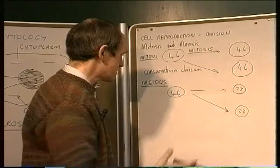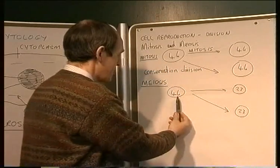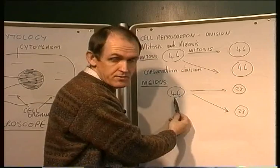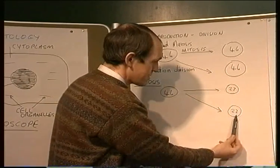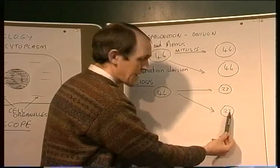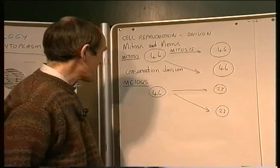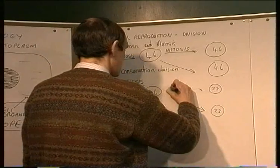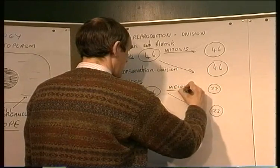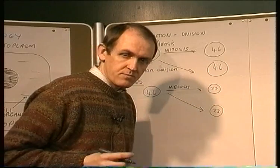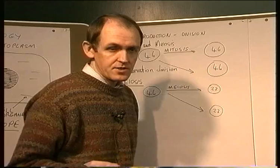So, the number of chromosomes has been reduced from 46 in the parent cell — the germ cell, whether it's in the ovary or the testis — and it is reduced to 23 chromosomes in the gamete cell, which is either the sperm or the egg cell. This process is meiosis, and because the number of chromosomes has been reduced, it's referred to as reduction division.